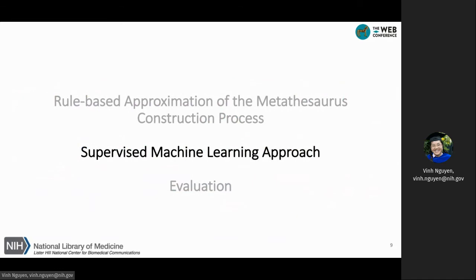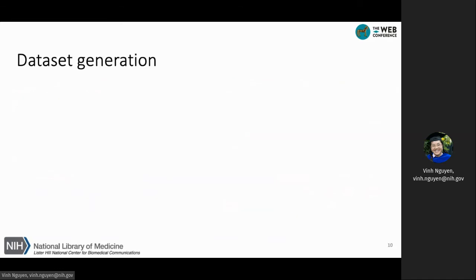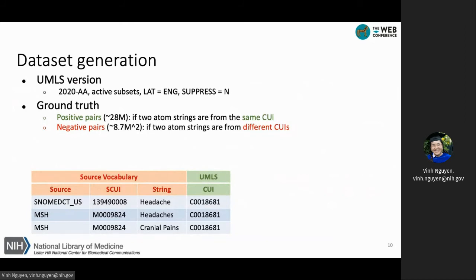We now describe the supervised learning approach, starting with dataset generation. We use the UMLS 2020AA version with vocabularies from the active subset, limiting the language to English and using only terms that are not suppressed. For the ground truth, we generate positive and negative pairs based on whether pairs share the same CUI. For example, headaches from SNOMED-CT and headaches from MeSH form a positive pair. The number of positive pairs is relatively small, but the number of negative pairs is very large — 8.7 million squared — so we sample the negative pairs to form a balanced dataset.